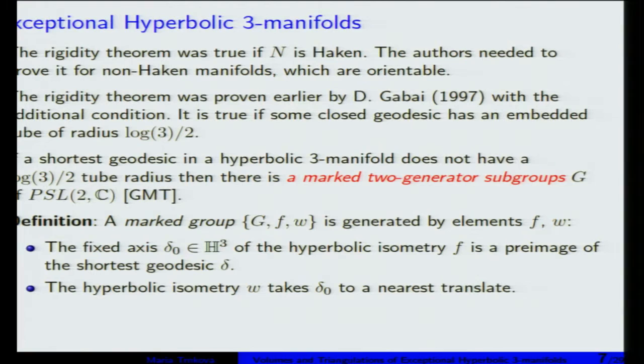There is a property: if you have a manifold that doesn't have this thick tube — those exceptional manifolds — then the fundamental group of this manifold has a subgroup called a Margulis II generator subgroup. Let me explain how this group looks. It is generated by two elements, F and W, and we can place them in a special position. One element F preserves the axis in the universal cover — the geodesic from zero to infinity. We want F to preserve the shortest geodesic of the manifold, so it corresponds to the shortest geodesic.